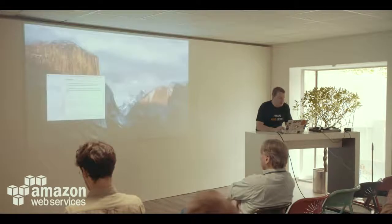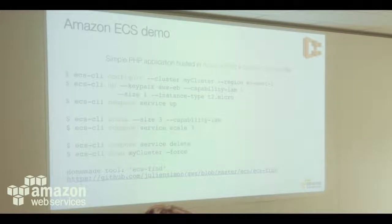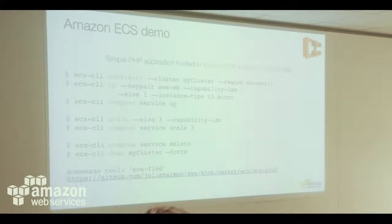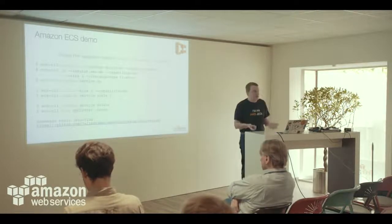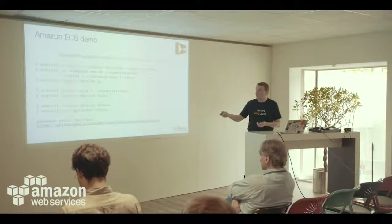Once the cluster is up, we'll deploy a small PHP application to it using a Docker Compose file. If you're familiar with Docker, you know you can write compose files with properties like environment variables, volumes, and linking between containers. I've got that small file written. I'll deploy it, and my PHP app — hosted in ECR — will be deployed on the cluster with a single command. Every time I fix something and want to redeploy, I can just run 'service up' again.